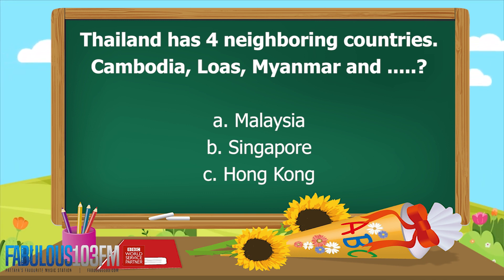And the last question for today, a Thailand related question. Thailand has four neighboring countries. They are Cambodia, Laos, Myanmar, and which other country? Is it A: Malaysia, B: Singapore, or C: Hong Kong?